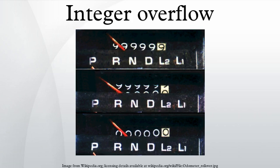In computer programming, an integer overflow occurs when an arithmetic operation attempts to create a numeric value that is too large to be represented within the available storage space. For instance, taking the arithmetic mean of two numbers by adding them and dividing by two, as done in many search algorithms, causes an error if the sum is too large to be represented, and hence overflows. The most common result of an overflow is that the least significant representable bits of the result are stored.